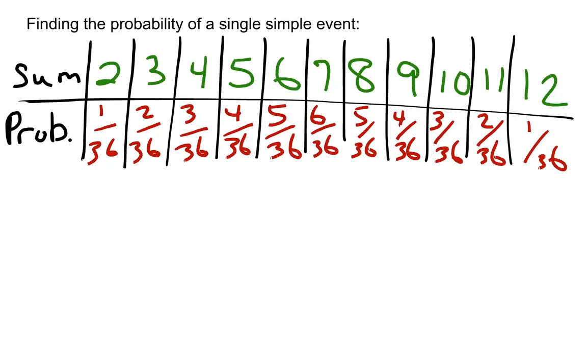First, let's look at finding the probability of a single simple event. Suppose that you roll two dice. As you know, when you roll two dice, your possible sums are between 2 and 12.